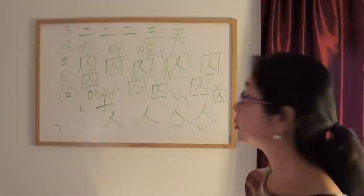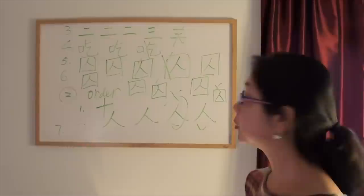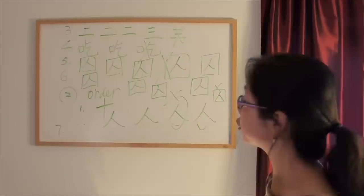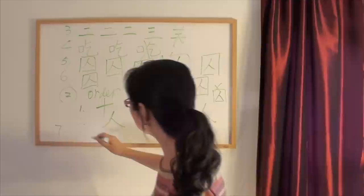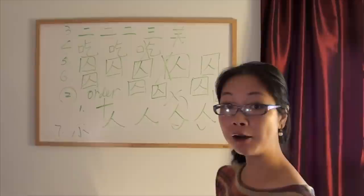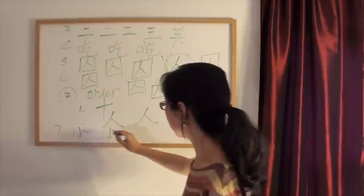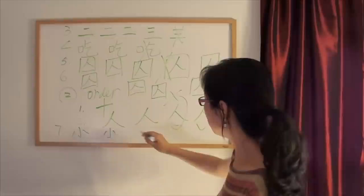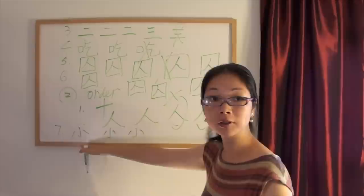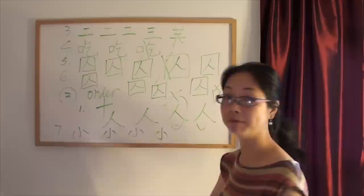Rule number seven: if the character has a middle stroke flanked by two sides, the middle stroke should always be written before the two sides. Take the character xiao, meaning 'small' — it has both left and right sides with a middle part. Write the middle part first, then left, then right. When you meet middle strokes, always go middle first, then left, then right.